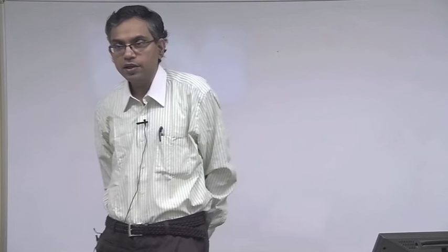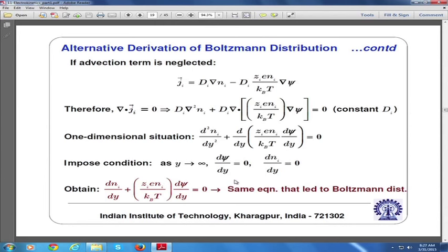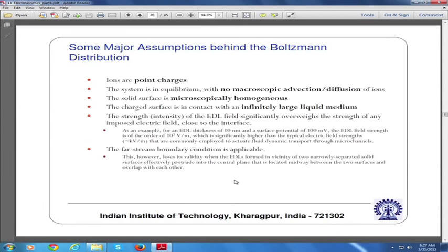In the previous lecture we derived the Boltzmann distribution. Let us recapitulate a little bit. We expressed the number density of ions — looking at the final formula in the slide — in terms of the bulk number density and the potential within the electrical double layer. This is a very commonly used form of the ionic number density distribution, but with its simplicity there are certain assumptions that need to be carefully taken into consideration.